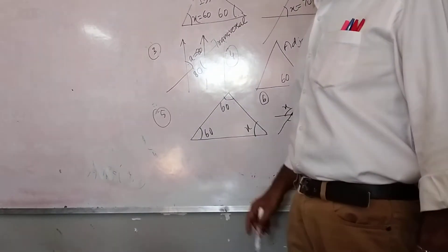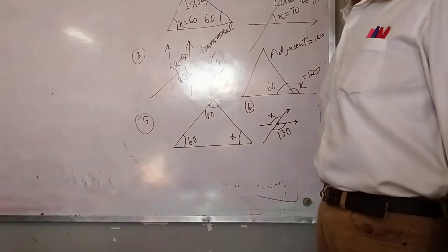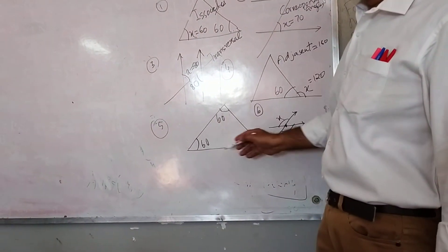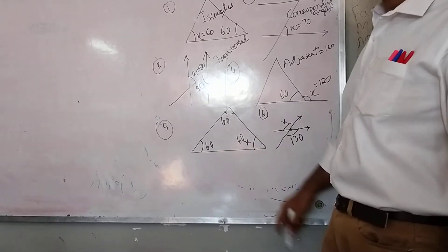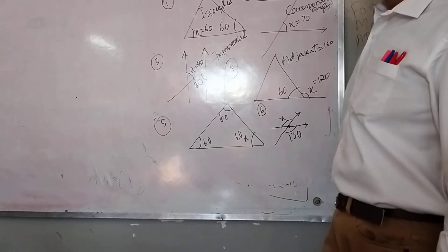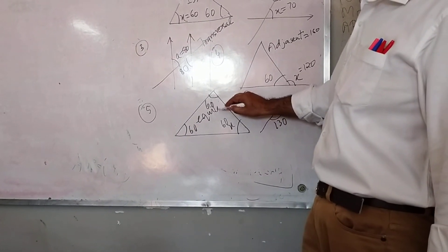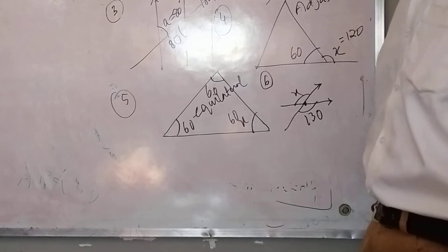What type of triangle is number 5? It is equilateral triangle. All the angles will be equal: 60, 60. Obviously this will also be 60 because the sum of the triangle is 180. So this is your equilateral triangle. All sides are equal, all angles are equal.